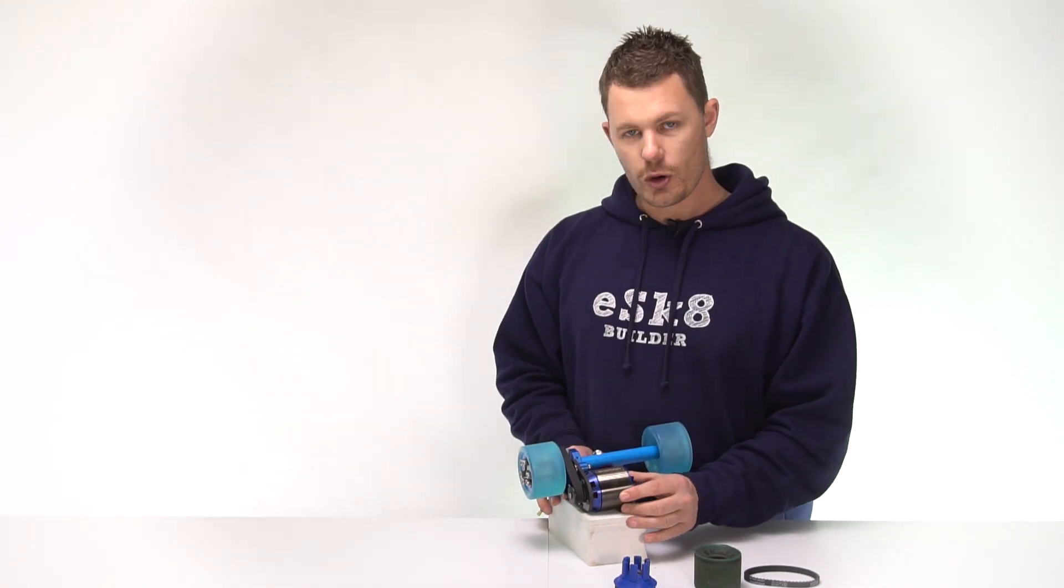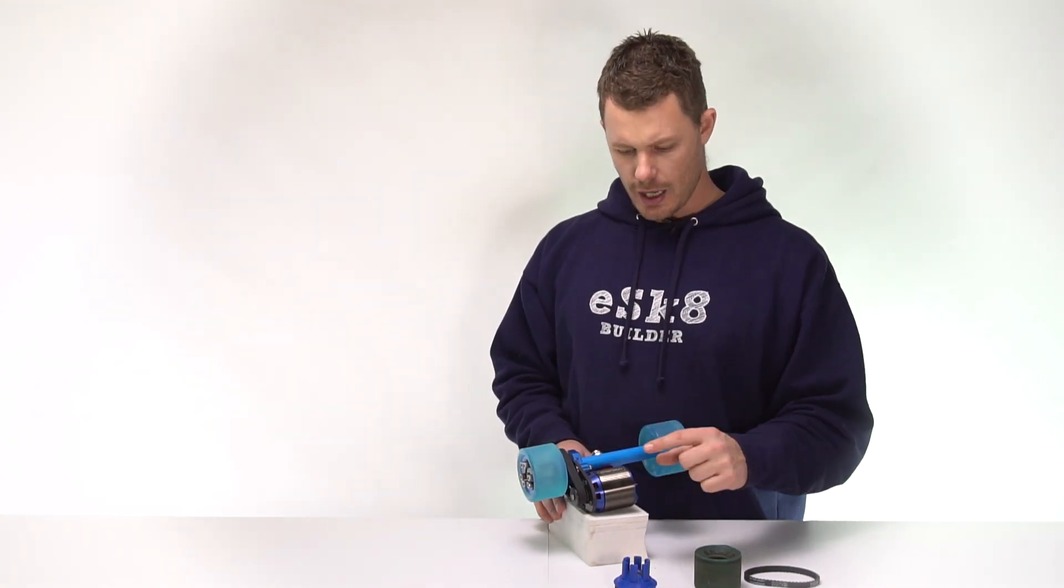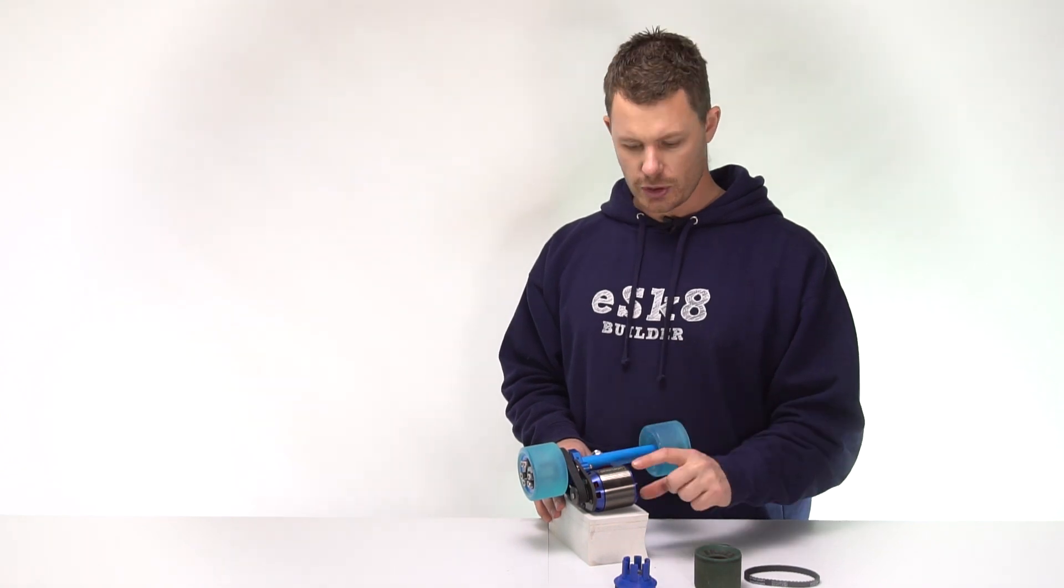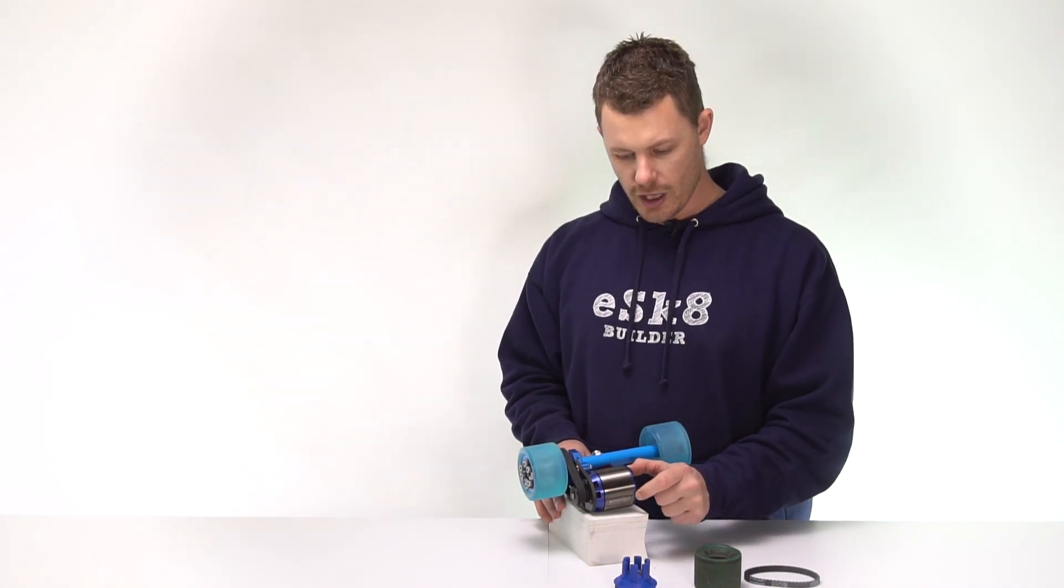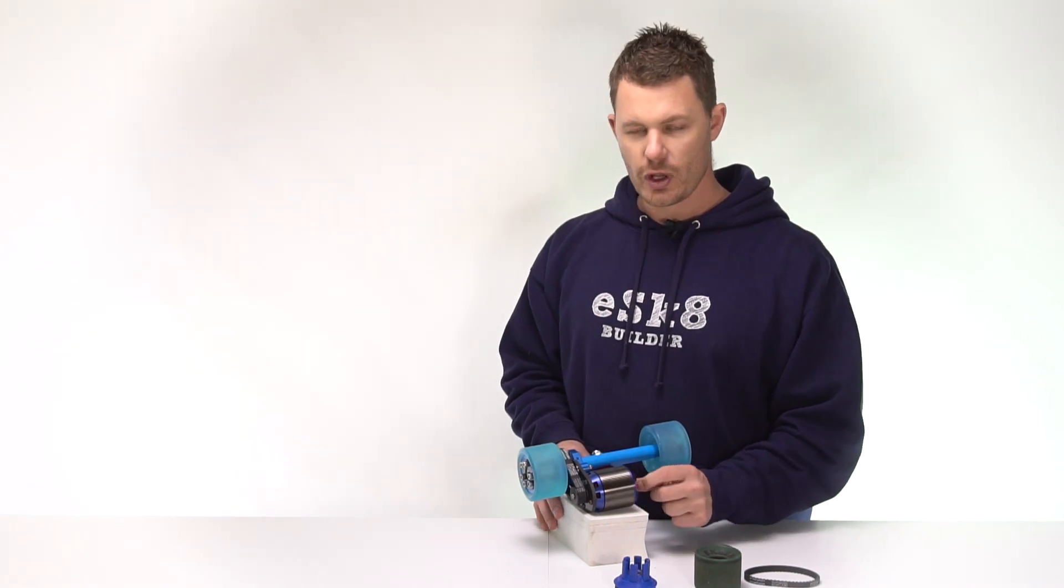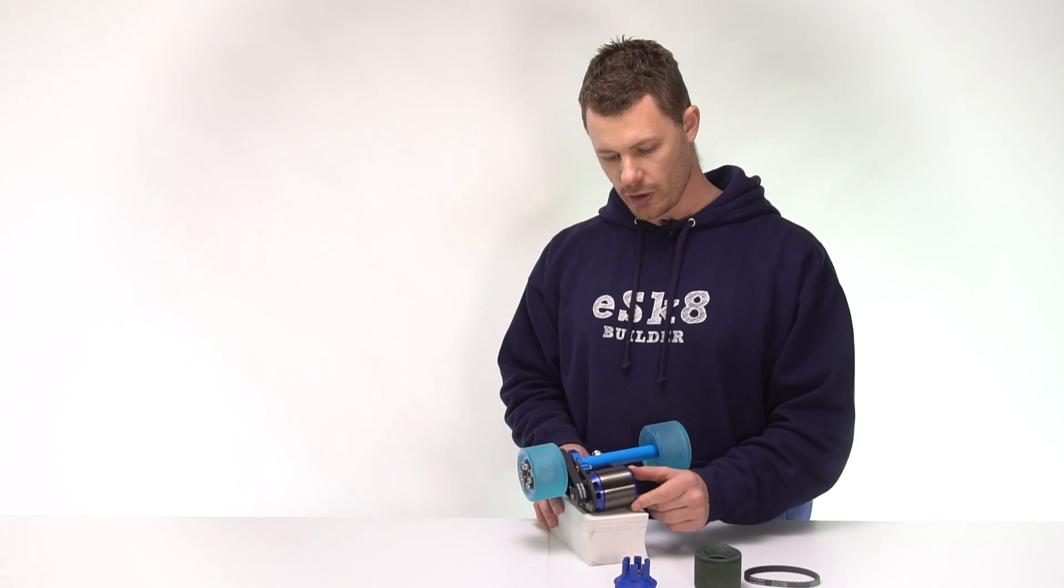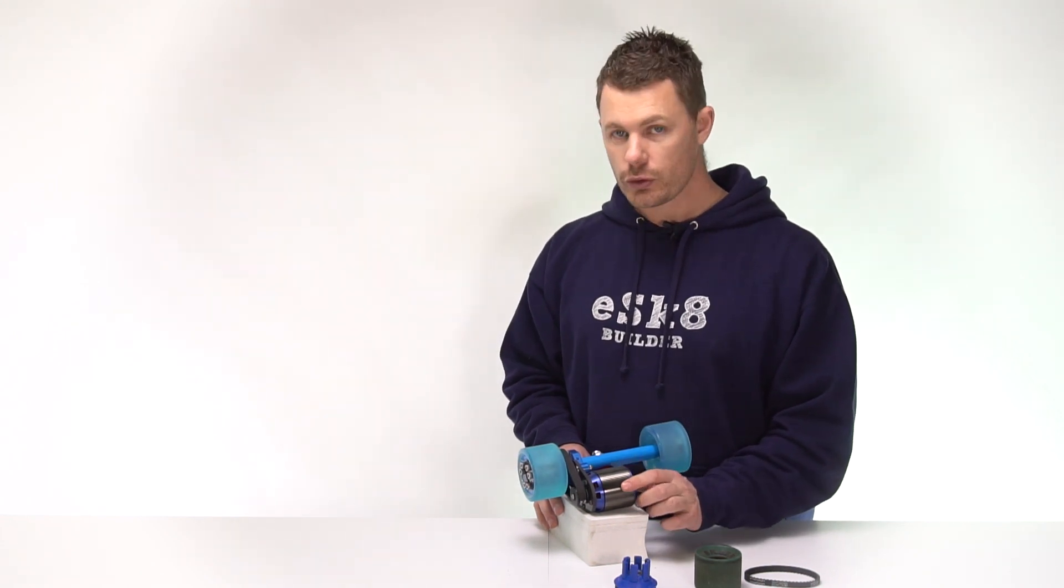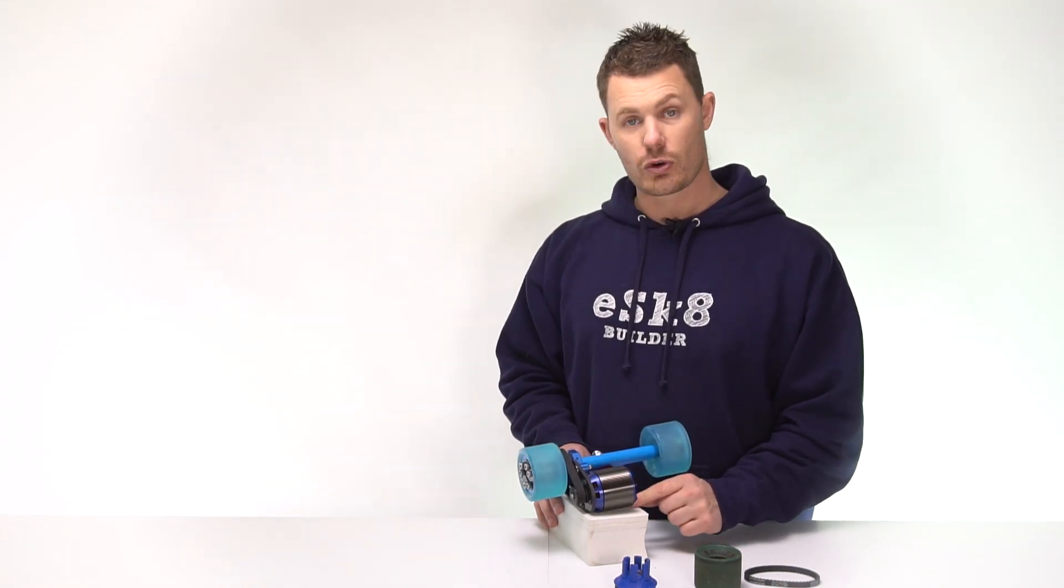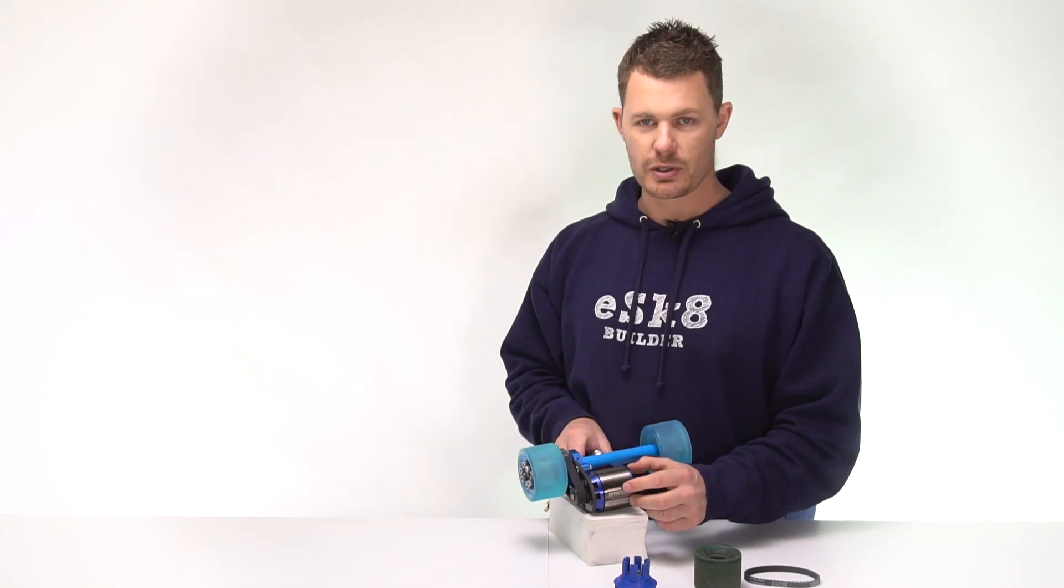Once you've decided on your battery voltage then with that knowledge you can choose the correct motor KV. Now the motor KV just think about it in these simple terms. It's the amount of times the motor will rotate per volt. So if you have more volts you will get this rotating faster.